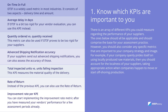If OTIF is a bit too rigid for your vendor evaluation, you can use alternative KPIs instead. To get the average delay of a supplier, add up all the days their deliveries were delayed during the assessment period, then divide by the total number of deliveries. For quantity ordered versus quantity received, divide the quantity received by the quantity ordered and multiply by 100 to get the percentage.